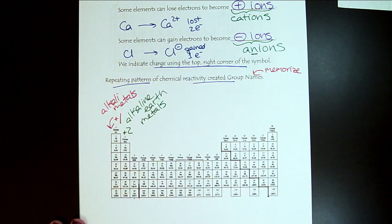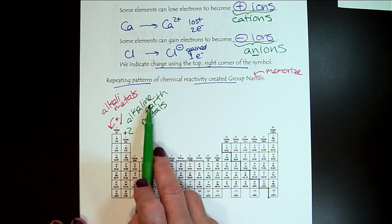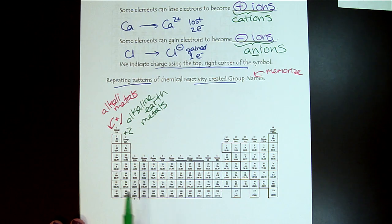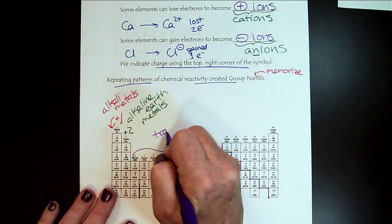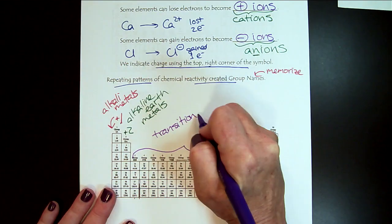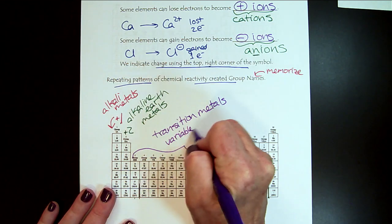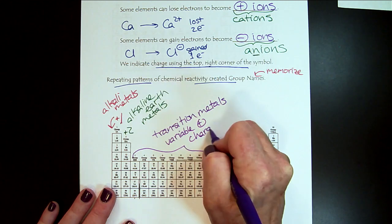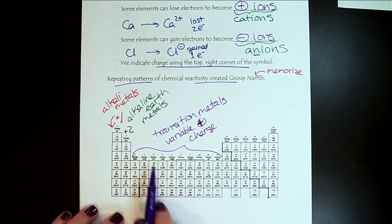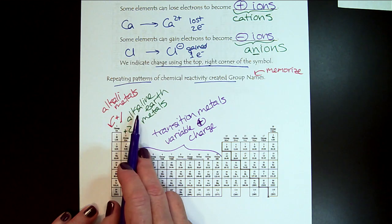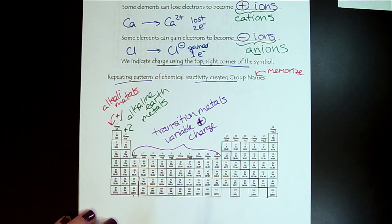One trick that helped me when I was learning these names is write alkali, only one word plus one. Alkaline earth, two words plus two. In the middle here, these 10 columns are called the transition metals. The transition metals, they're tricky because they can have variable positive charge. These alkali and alkaline earth, they're fixed. Always plus one, always plus two. But the transition metals can have variable charges.